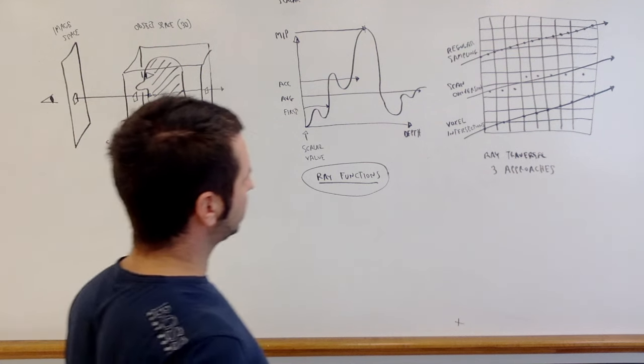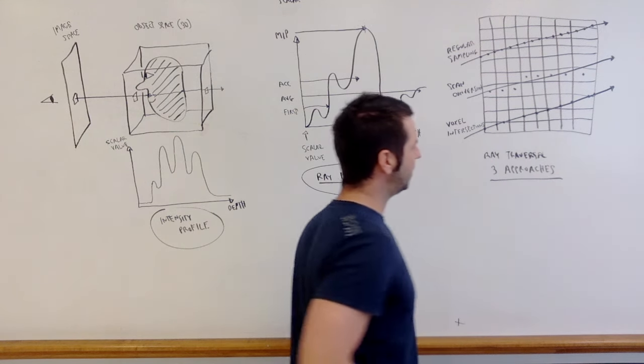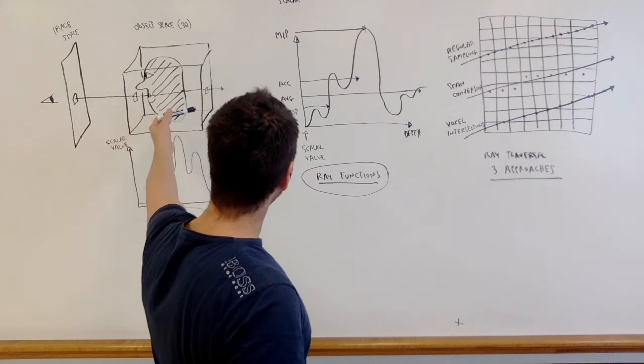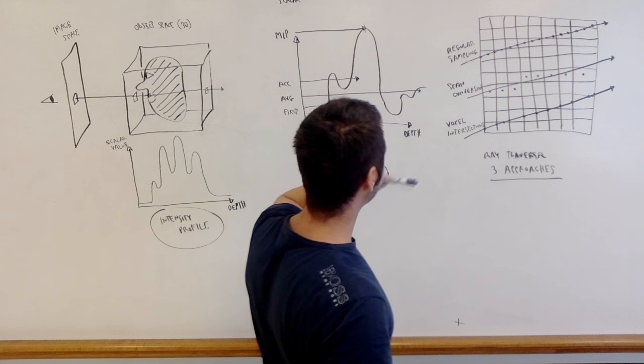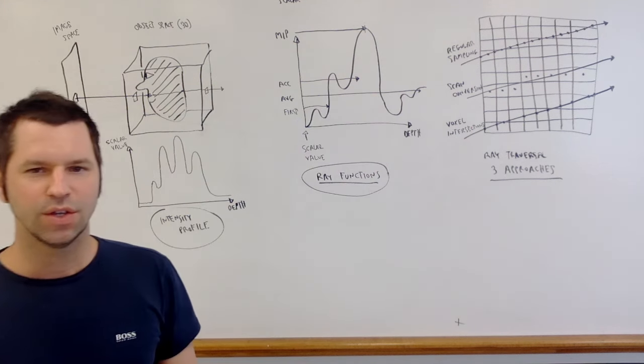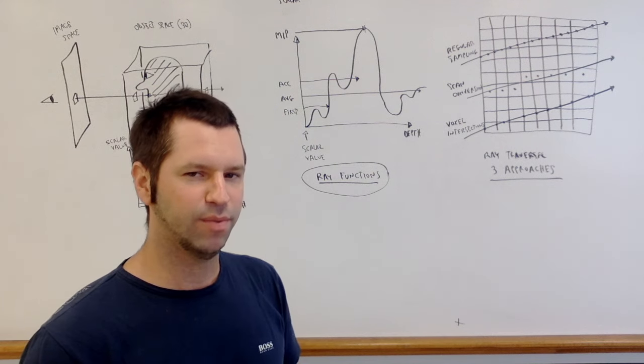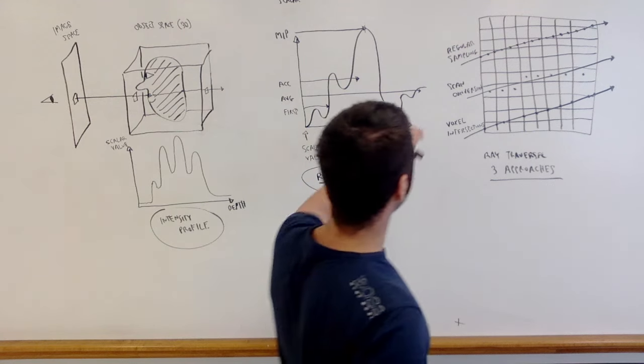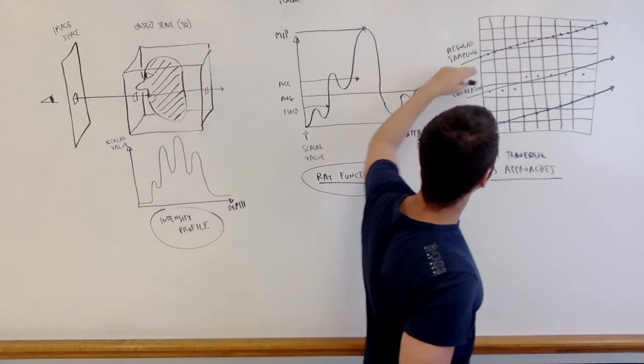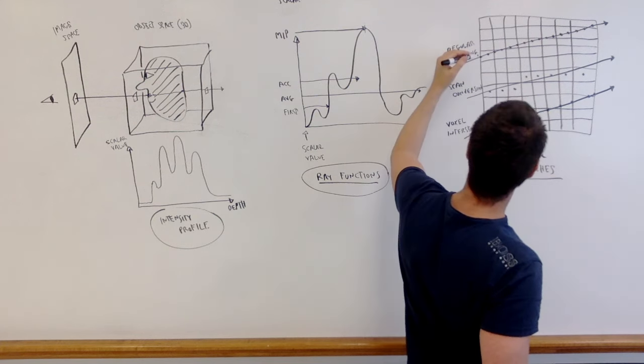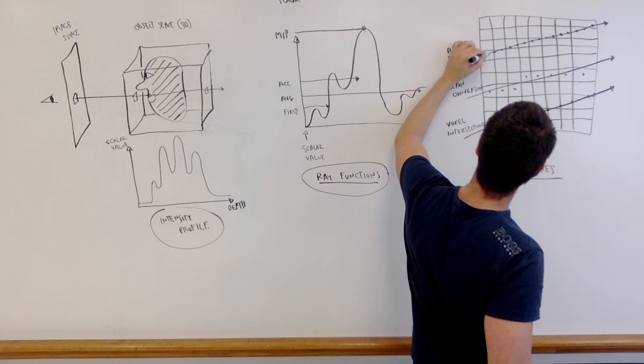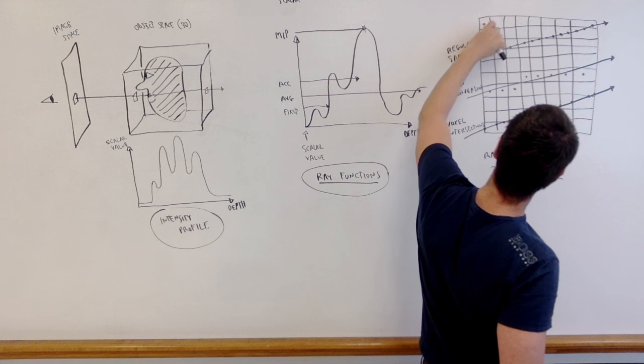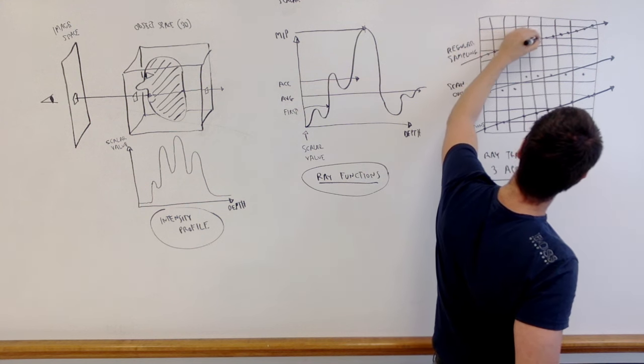And then the third part of this is ray traversal - three basic approaches to ray traversal. As the rays traverse the volume data, they generate an intensity profile and they sample the volume data. So there are different ways to sample the volume data. I tried to draw three different ways on the board. The first one is regular sampling. So that means these are three rays traversing a volume. In the regular sampling case, the distance between samples along the ray is always the same. So this distance is supposed to be the same as this distance, and so on. That's the idea. That's why it's called regular sampling.